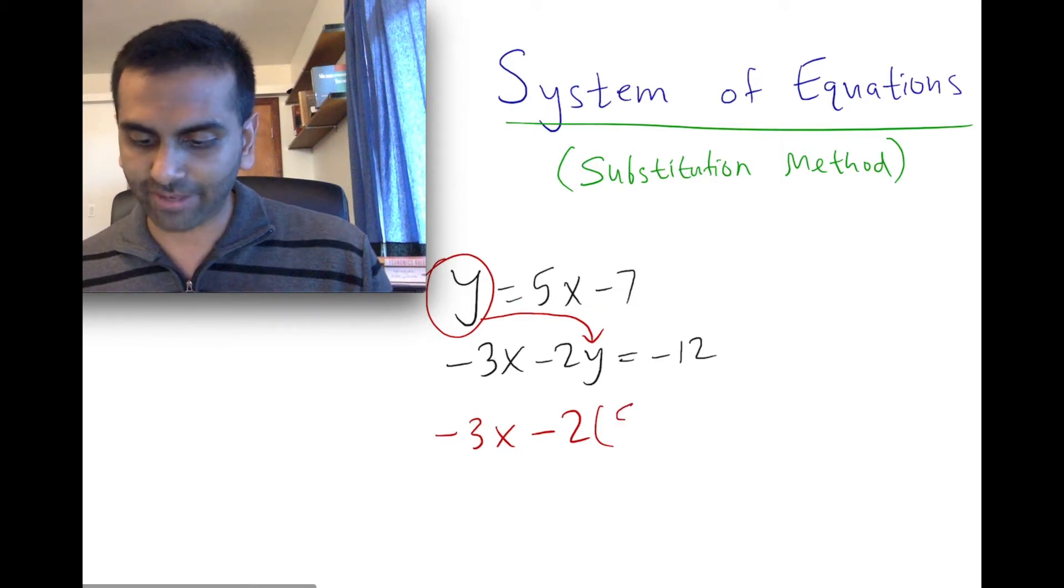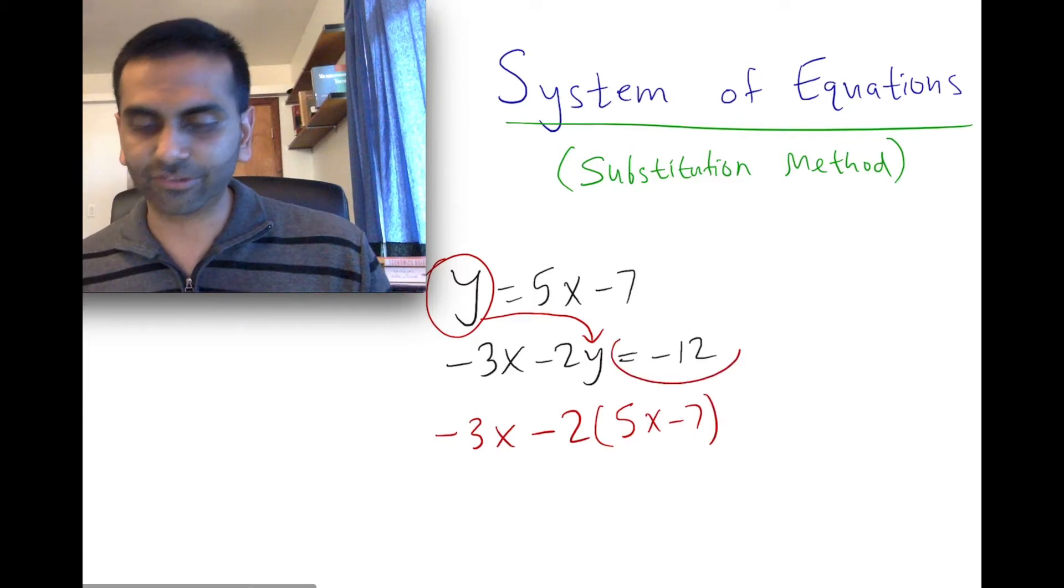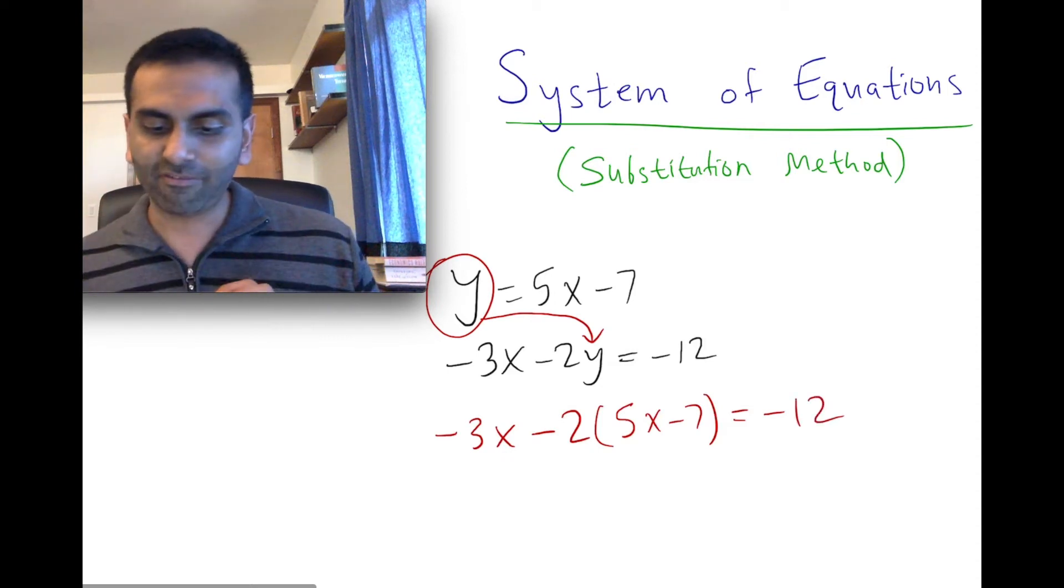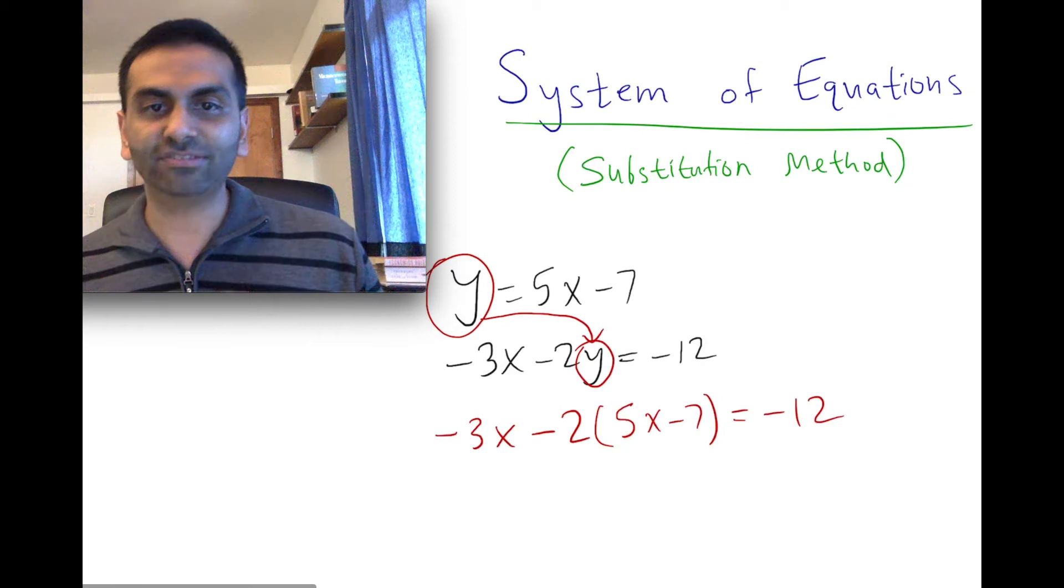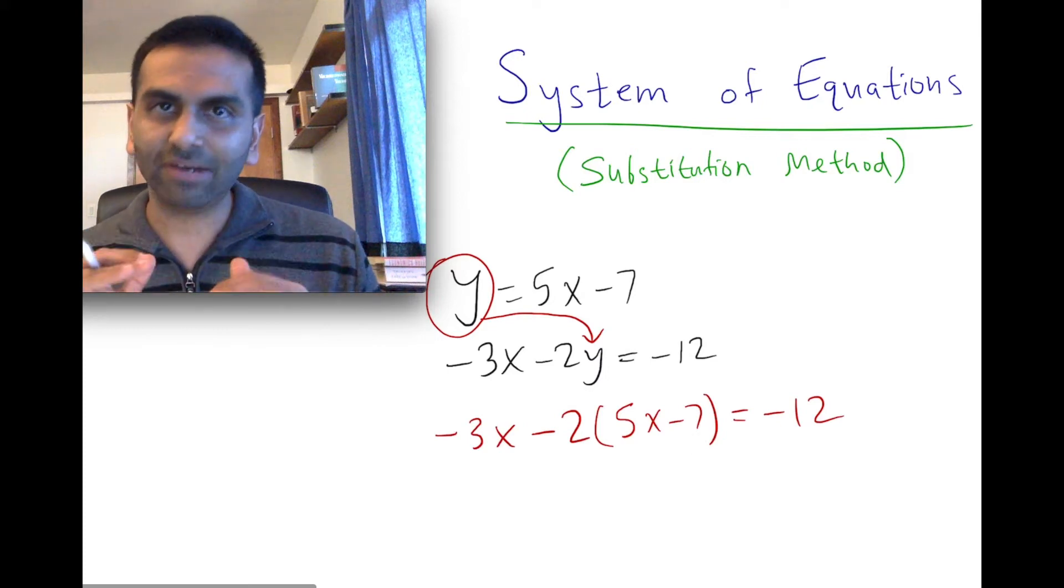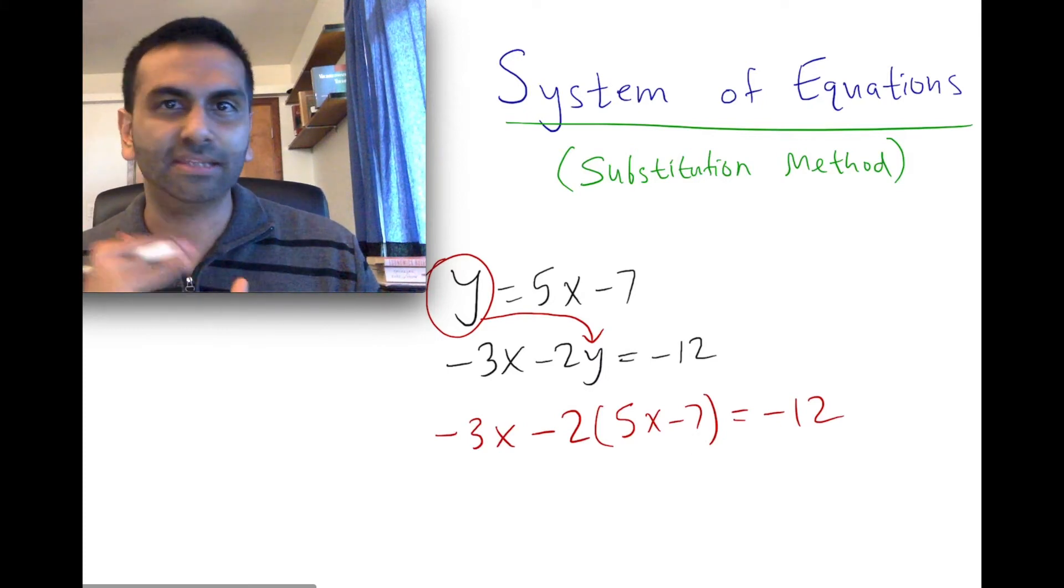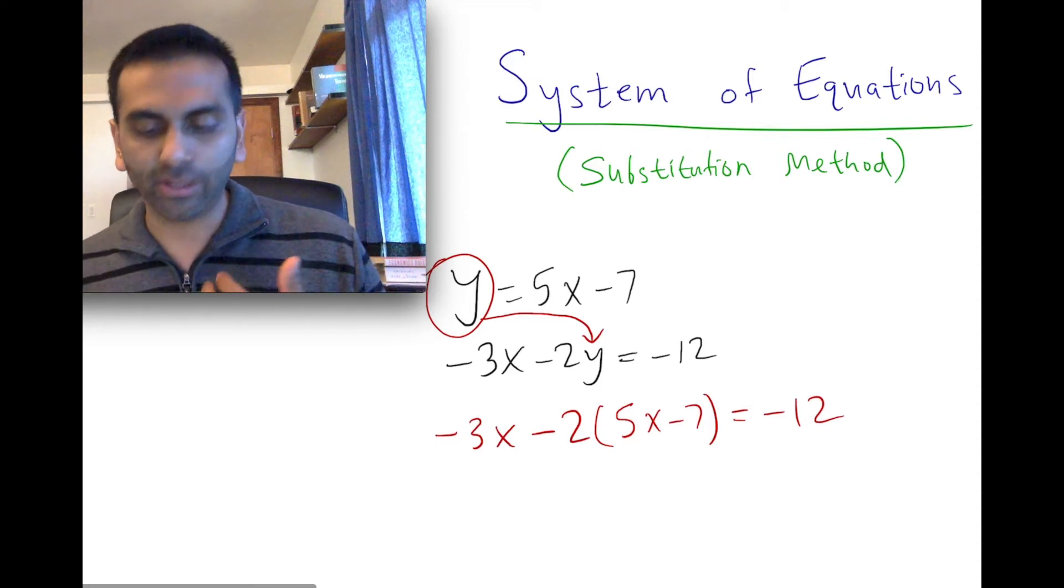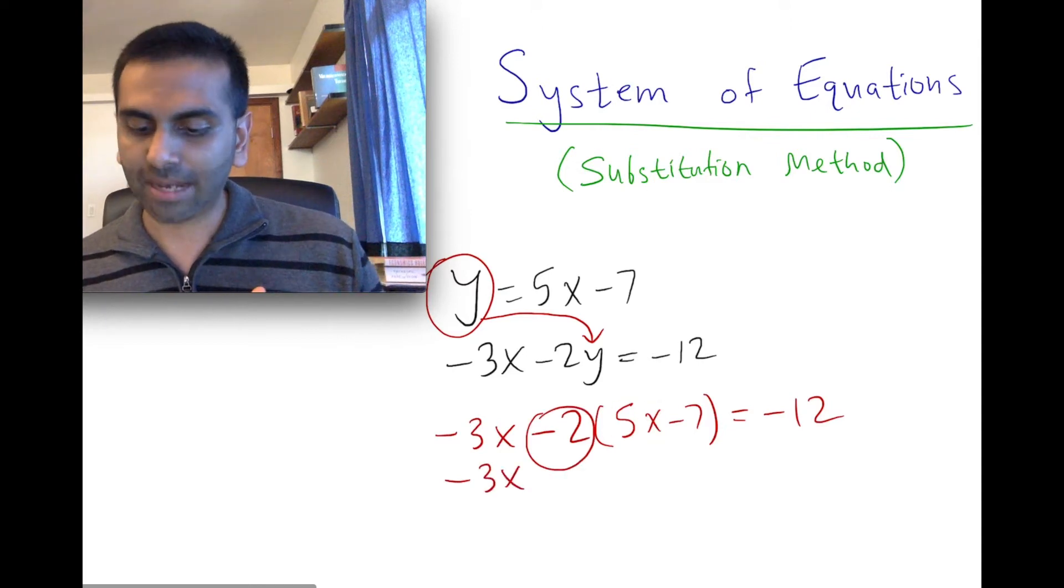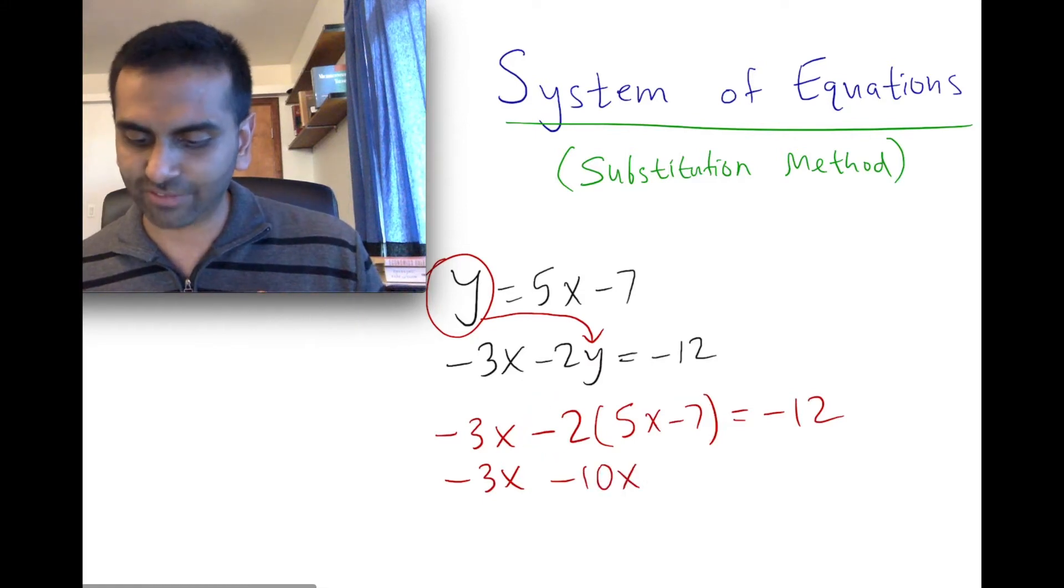So instead of y, 5x - 7. Now I'm going to go back to just transcribing it down, equals -12. So all I've done is I've basically written this equation, but with this y replaced with what it really equals based on the other equation. Once you have it down to here, it's just algebra. It's no different than the one variable, one equation problem. So here we just have to be careful with distribution. So that's going to be -3x, and then -2 times 5 is -10x, but then -2 times -7 is +14. So +14 equals -12.